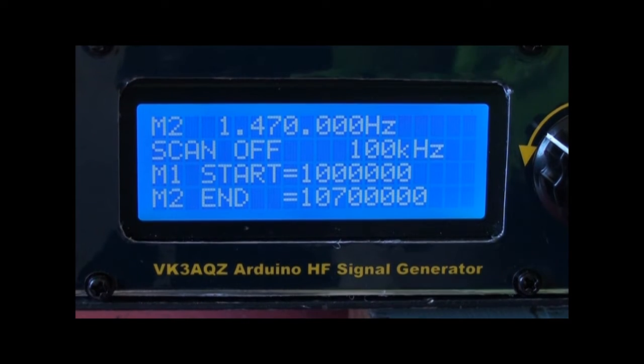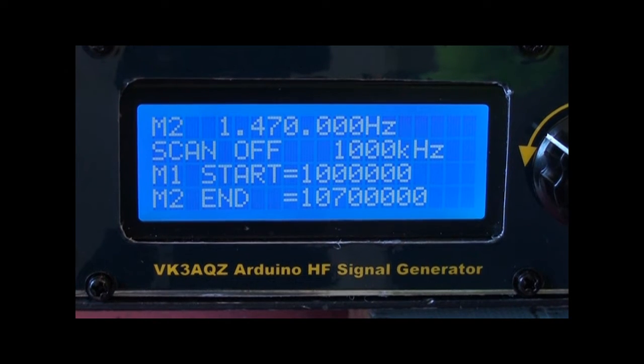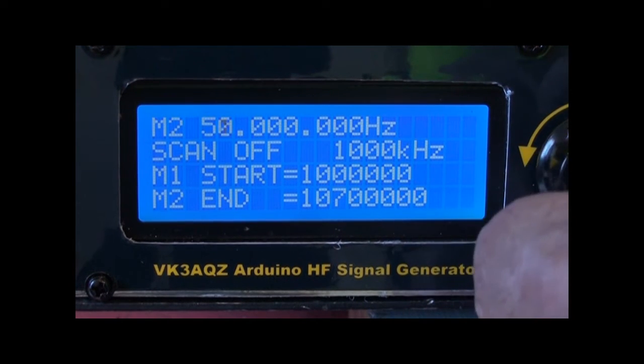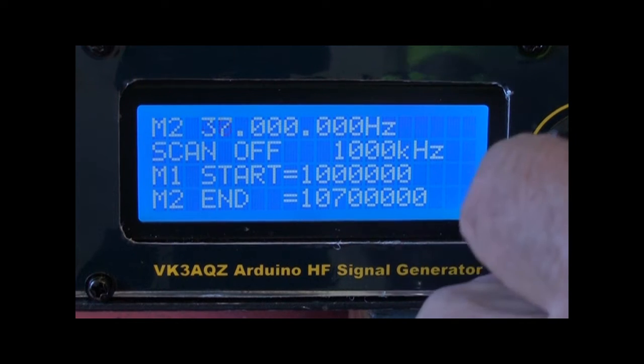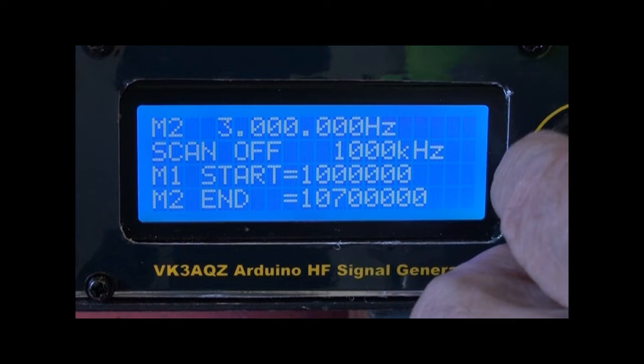The generator covers from 10 kHz to 54 megs. I can select the tuning speed using the rotary encoder. That's 1 meg steps, all the way down to 1 Hz steps.